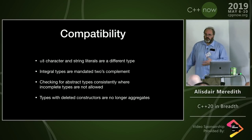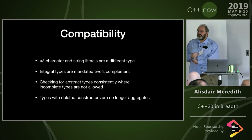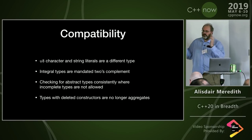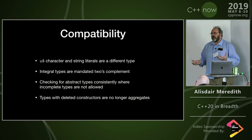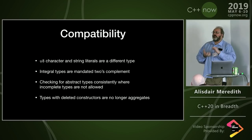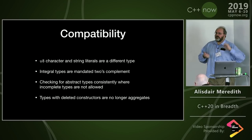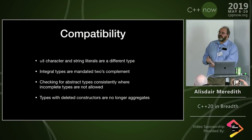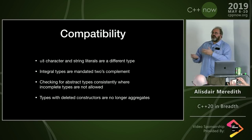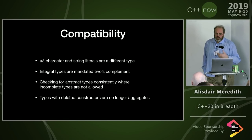Other compatibility gotchas as you make the transition: u8 character and string literals are now a different type — we have char8_t. Any code using auto deduction with those will still compile but will deduce different types, changing the ABI. On the other hand, if you're trying to assign these literals to a char* or const char*, that code will no longer compile and will need to be addressed.